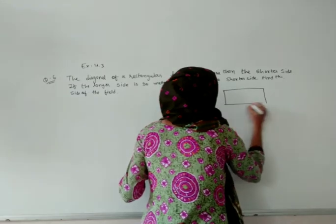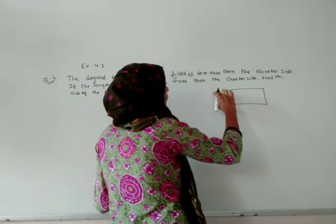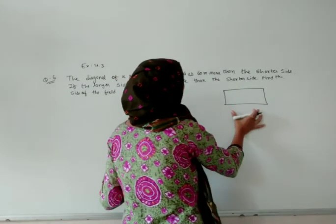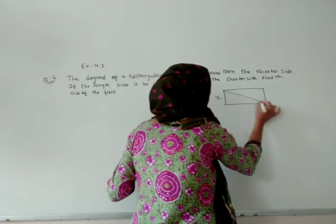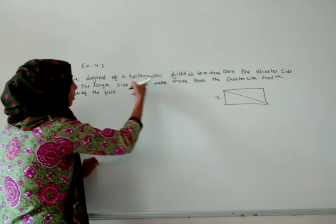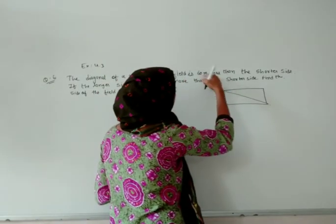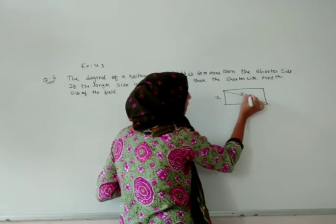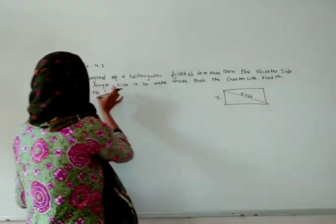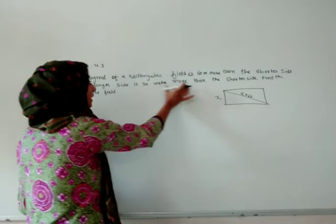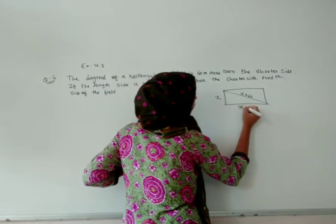If we are taking one rectangle, it has a shorter side and a longer side. We need to guess the shorter side because it is given that the diagonal of the rectangular field is 60 more than the shorter side. And similarly, the longer side is 30 meters more than the shorter side.